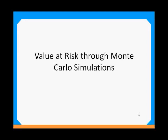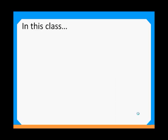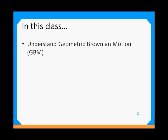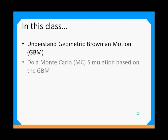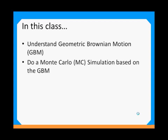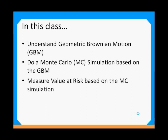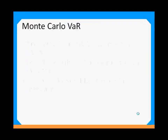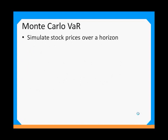Hello everybody. In this class I'm going to talk to you about value at risk through Monte Carlo simulations. We will learn about the geometric Brownian motion, which is a very key idea in many financial theories. We'll also do a Monte Carlo simulation based on the geometric Brownian motion, and finally we will measure the value at risk based on this simulation.